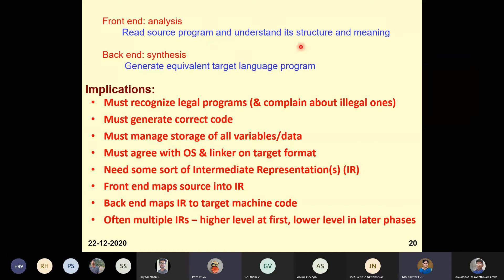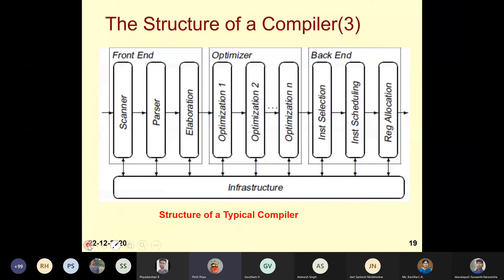A student asks: when writing directly in assembly language, the programmer already chooses registers and instructions like move and load. The instructor clarifies: a compiler converts from a high-level source language to the target. If you write code already in assembly language, a different translator called an assembler is used, which takes assembly language as input and creates the target code. That is a different kind of system software.